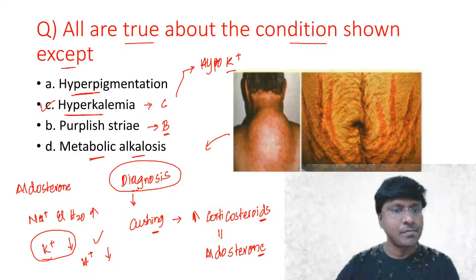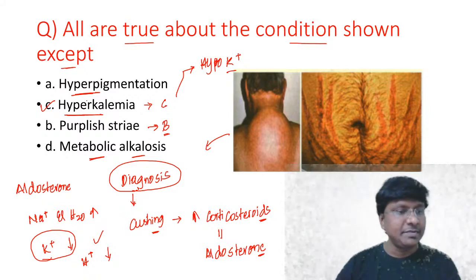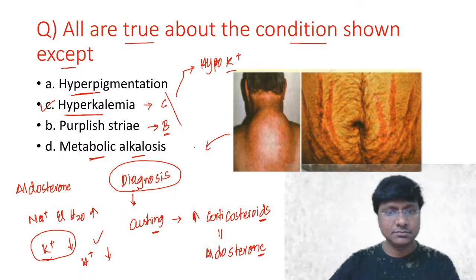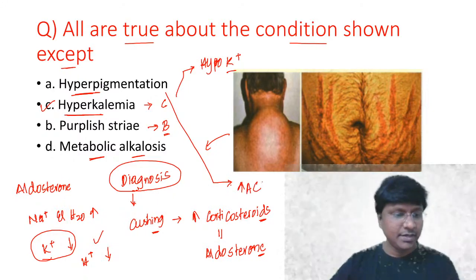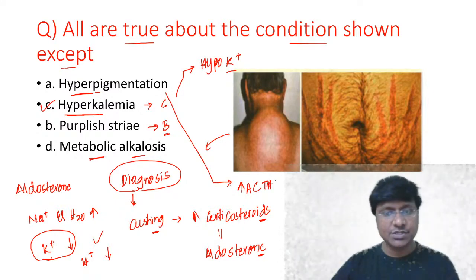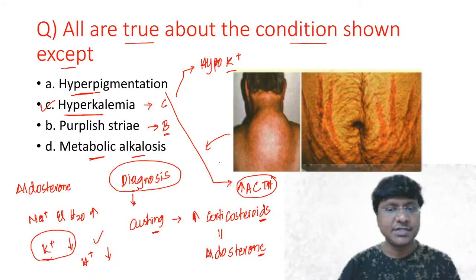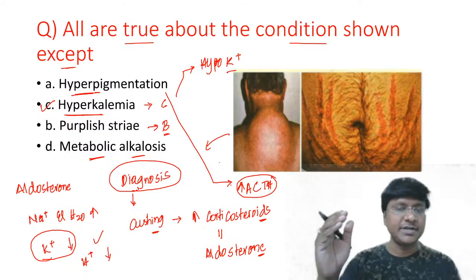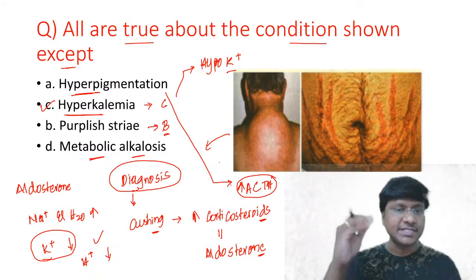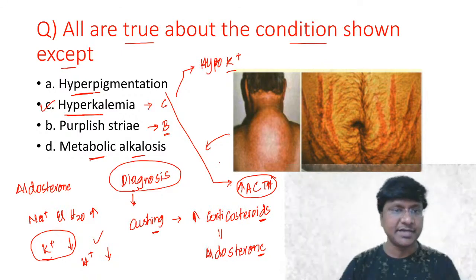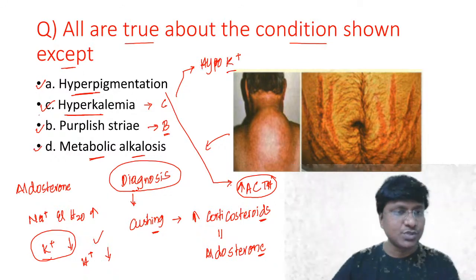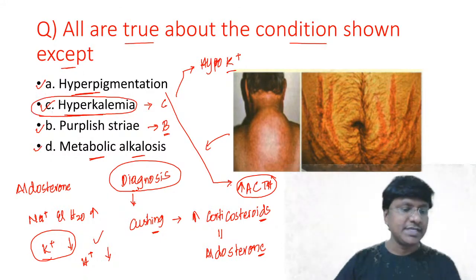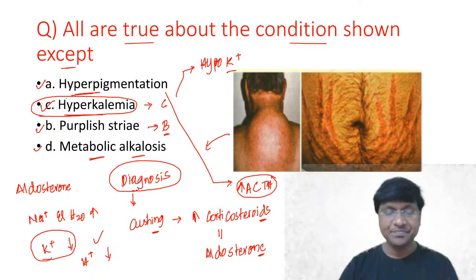Can anyone explain why there will be hyperpigmentation in patients with Cushing's syndrome? Hyperpigmentation is mainly because of increased ACTH levels — very good, Sagar answered this. In ACTH-dependent Cushing's, you will have hyperpigmentation. So purple striae will be there, metabolic alkalosis will be there, hyperpigmentation will be there, but hyperkalemia will not — what you will see is hypokalemia.